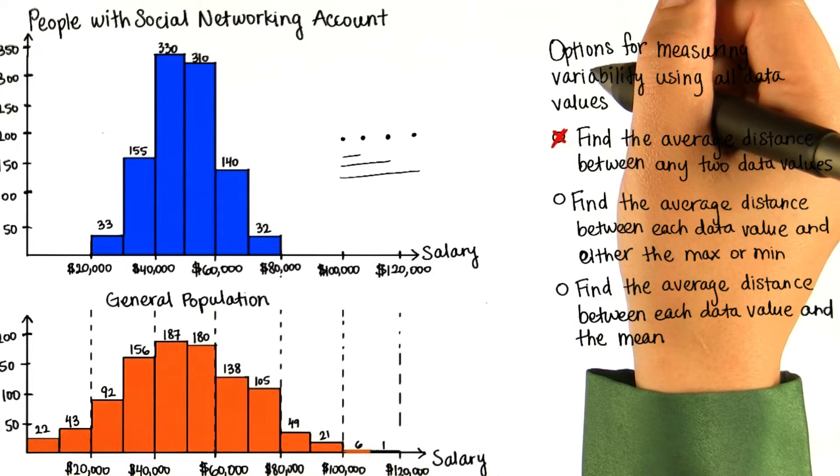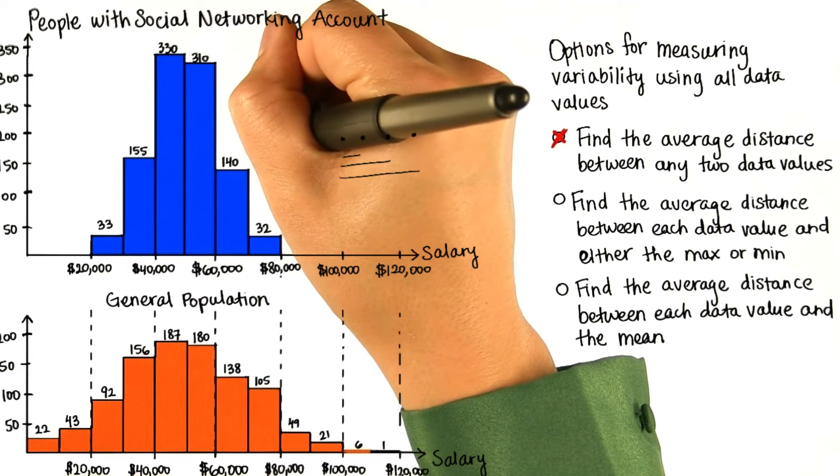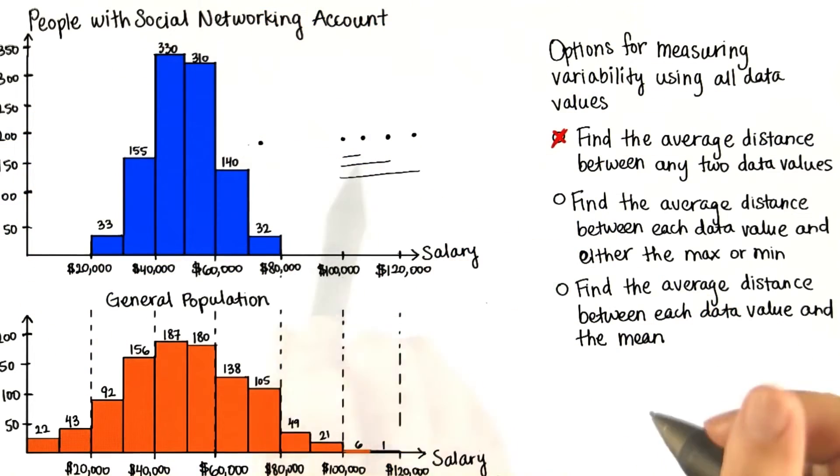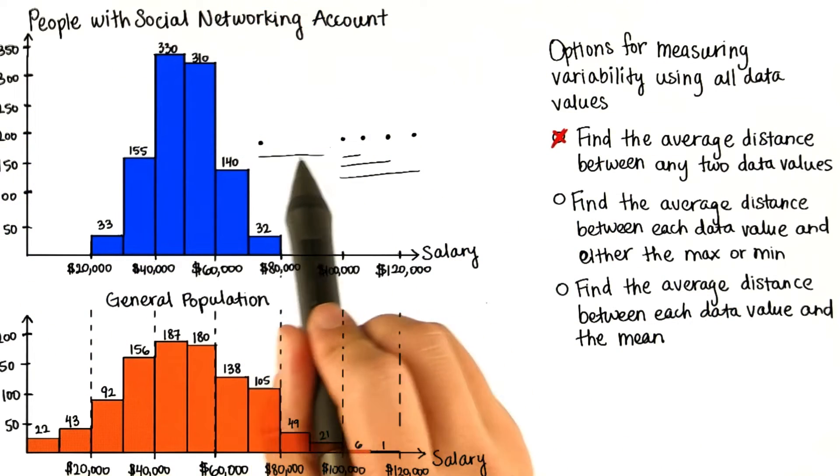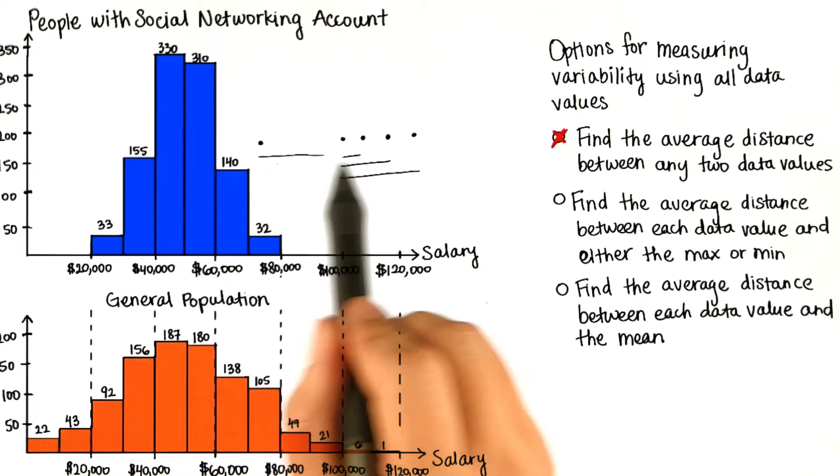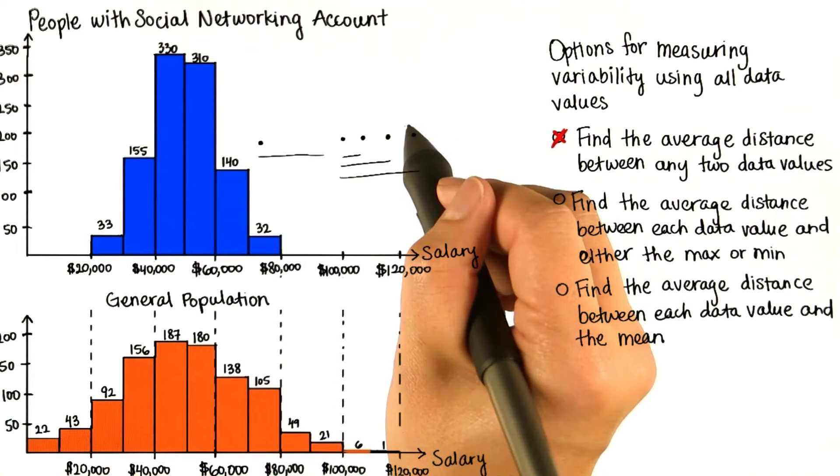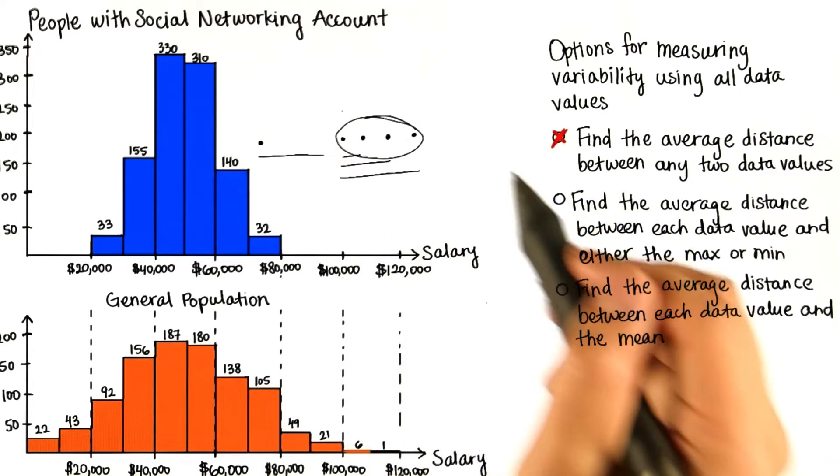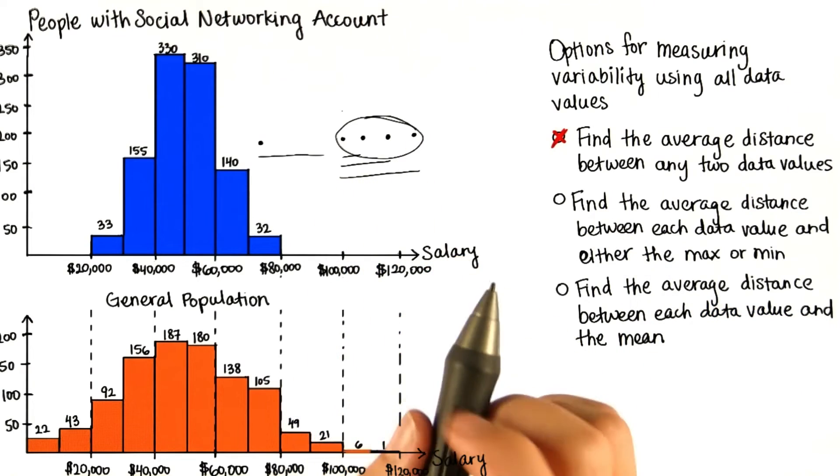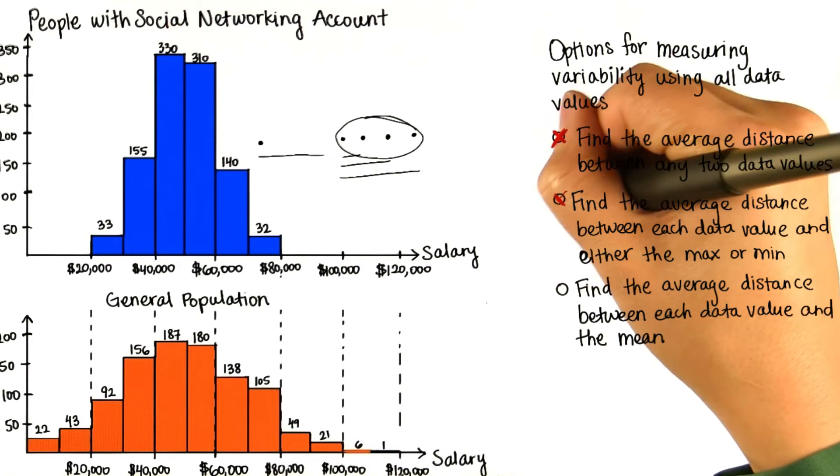But what if we had an outlier? What if we had a value all the way out here or even further? Then the distance of each from the outlier would be really far, and it wouldn't matter how closely grouped these were. One outlier would cause a huge variability. So this one doesn't work either.